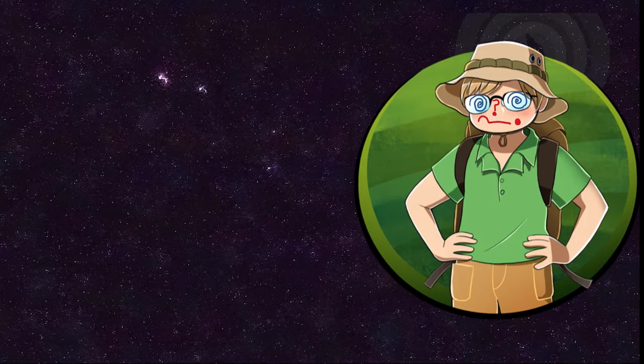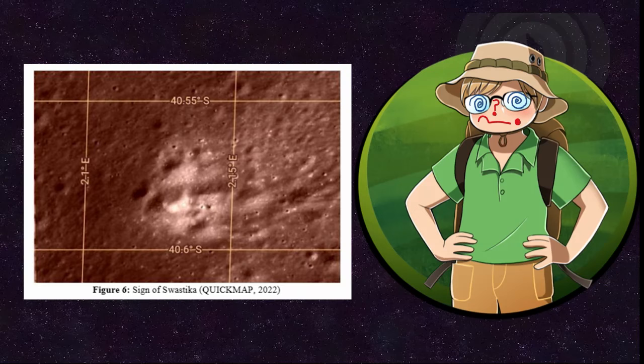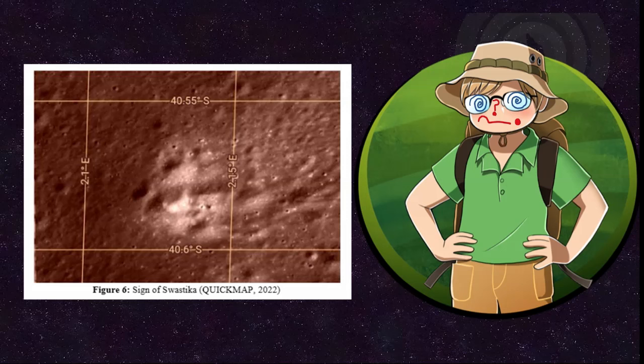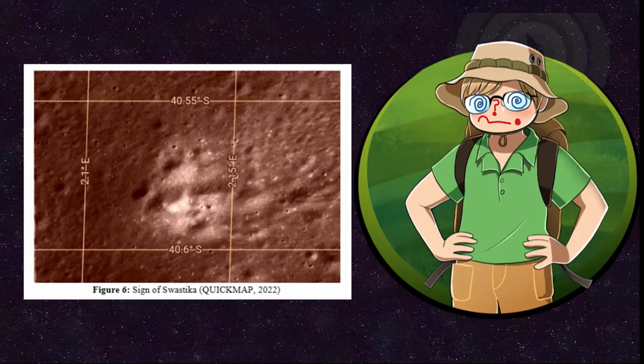And last but not least, the so-called carved swastika, which Saxena claims was the evidence for an advanced civilisation. Now, I can see some hills, but I can't see any straight lines or evidence for carving. At least no exactly straight lines. And to me, this just looks like some hills and some craters.